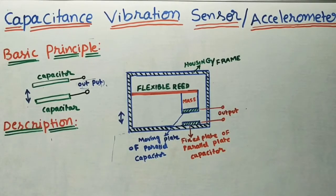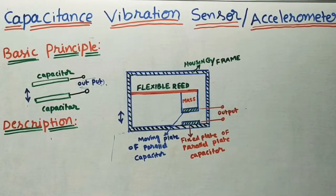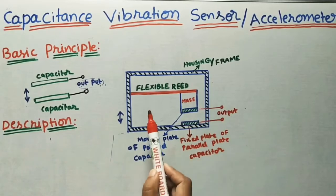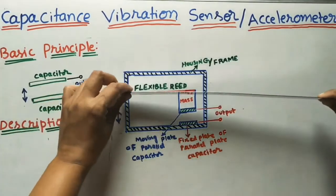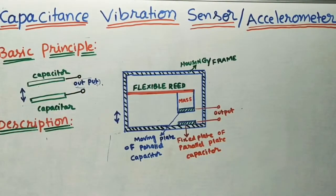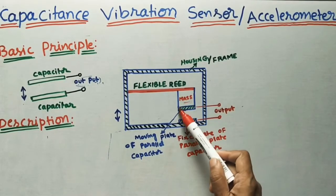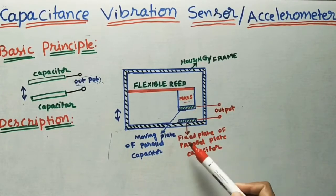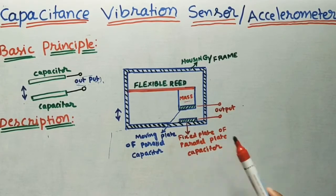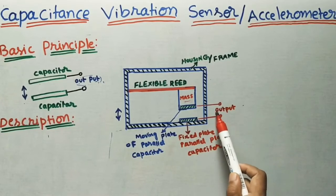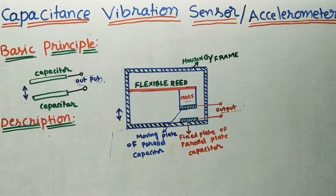There are three main parts of the axilometer. First is the housing, or frame. Inside the housing we keep one flexible reed — a thin plate fixed at one end. The first part is this reed, connected to the housing with its free end connected to a mass. The second part is a moving capacitor fixed at the mass, and the third is a fixed capacitor connected to the housing. These capacitors are connected via wires or terminals to the output for measuring.